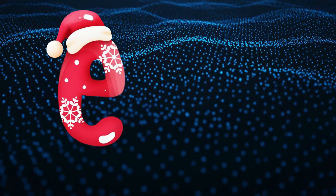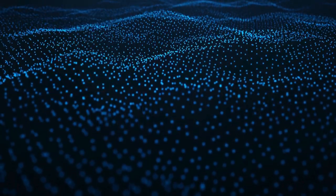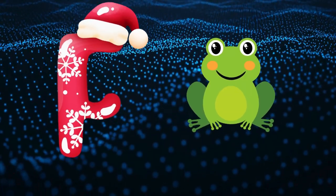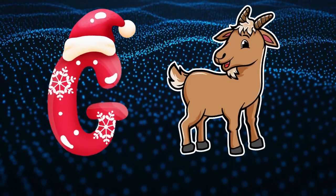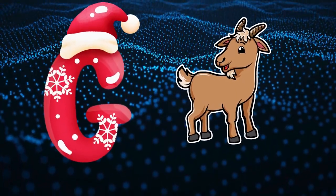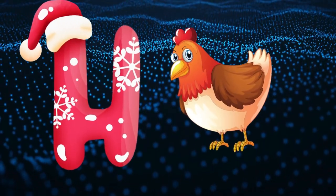E is for elephant, e-e-elephant. F is for frog, f-f-frog. G is for goat, g-g-goat. H is for hand, h-h-hand.